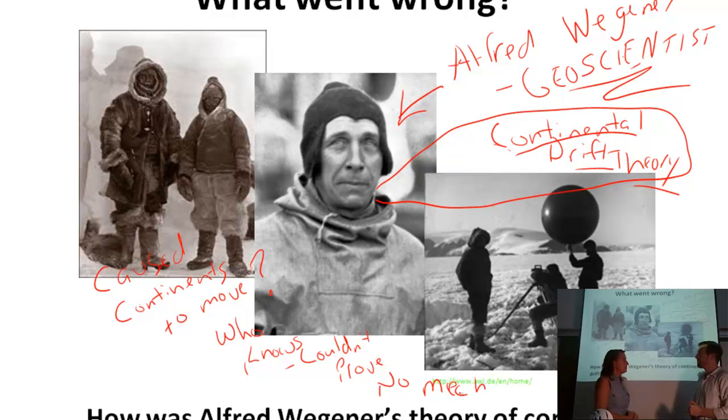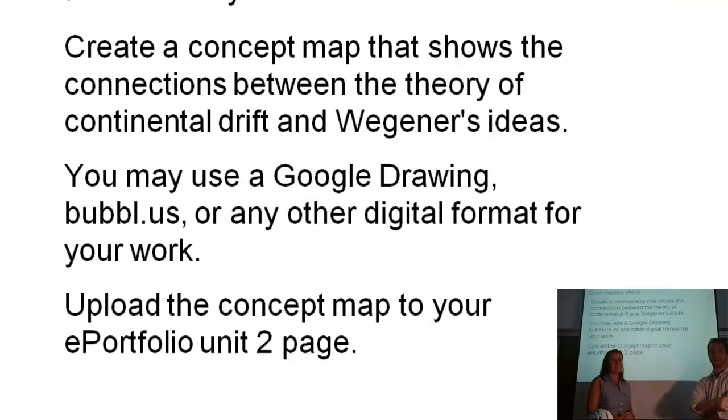You think they're ready for a mastery check, Mr. Baldwin? What do you guys think? You guys ready? Good. I think you guys got this. Let's go see the mastery check. Alright. So, what we're going to ask you to do is, we're going to ask you to create a concept map, that shows the connections between the theory of continental drift and Wegener's ideas. Now, you'll remember the ideas. You want to list four of them. And you want to describe what continental drift is, as you're making a concept map. Now, to make your concept map, you can either use a Google drawing,